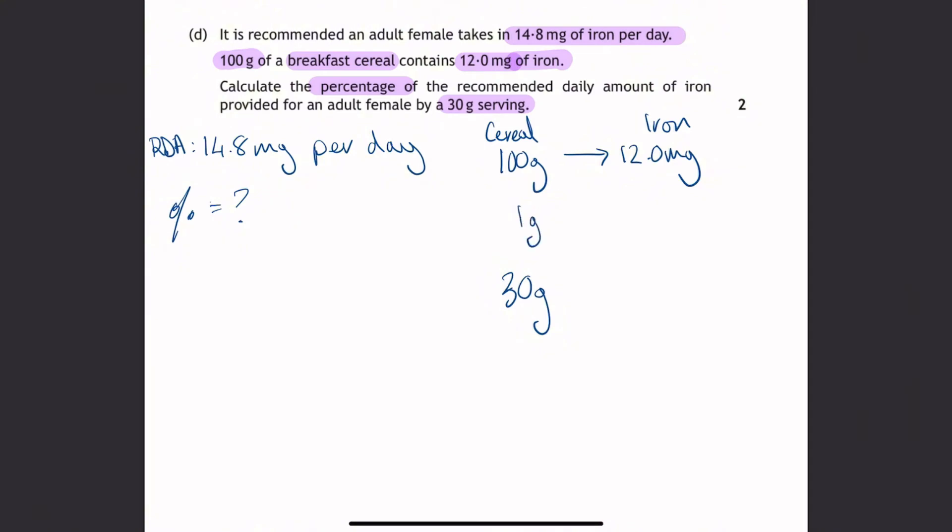So if we scale to 1 gram, scaling down we divide by 100, and then we scale up we times by 30. So we do the exact same on the other side. We divide by 100 and then we times by 30. Now usually I don't put this all in my calculator until the last line of working. So if we do that, 12 divided by 100 times by 30 gives us 3.6. So that means there's 3.6 milligrams of iron in 30 grams of the cereal.